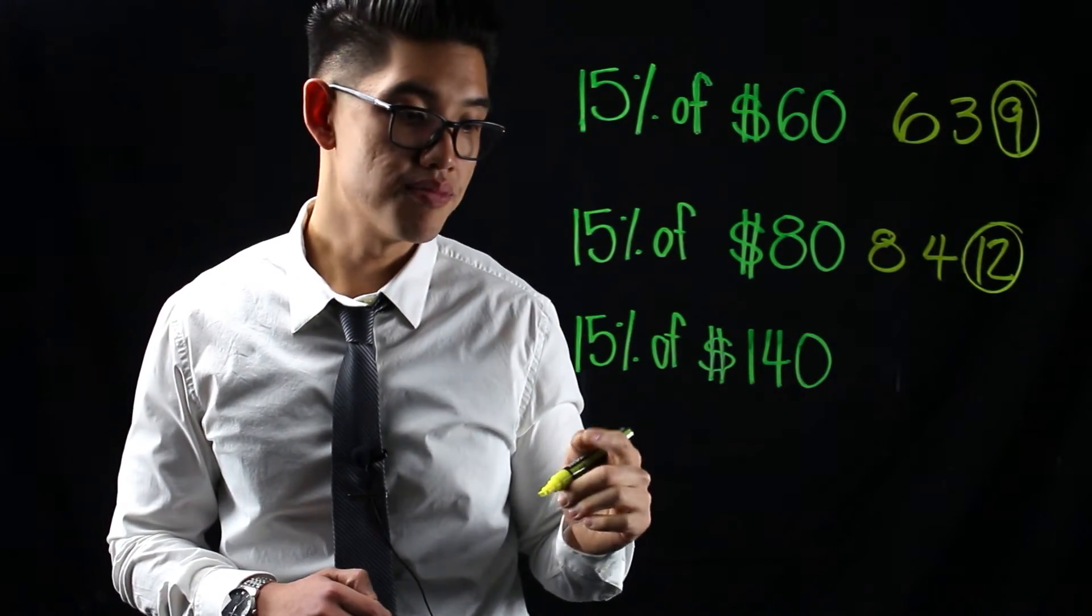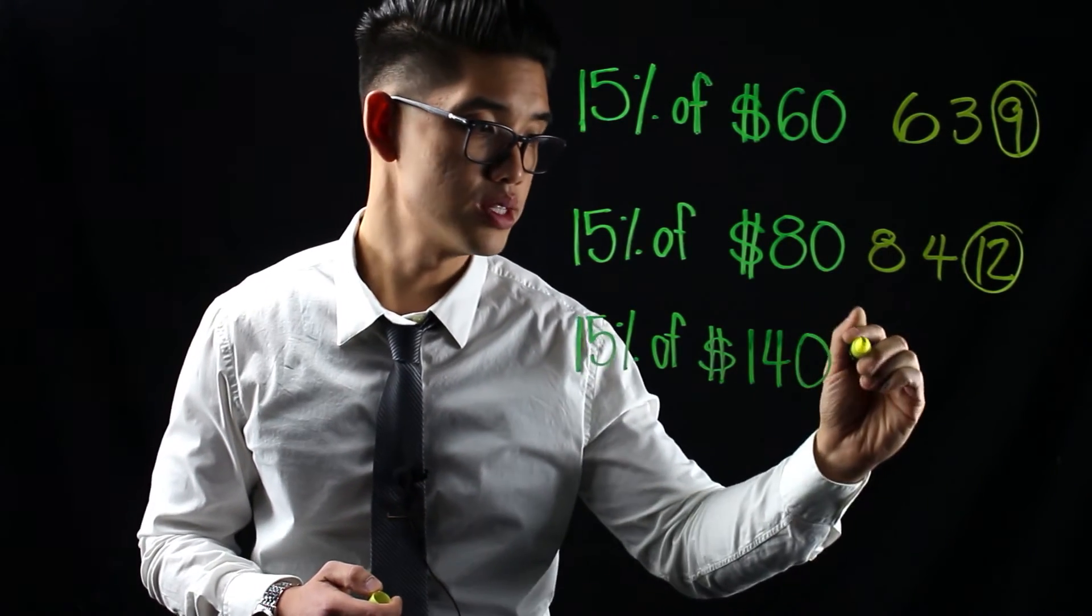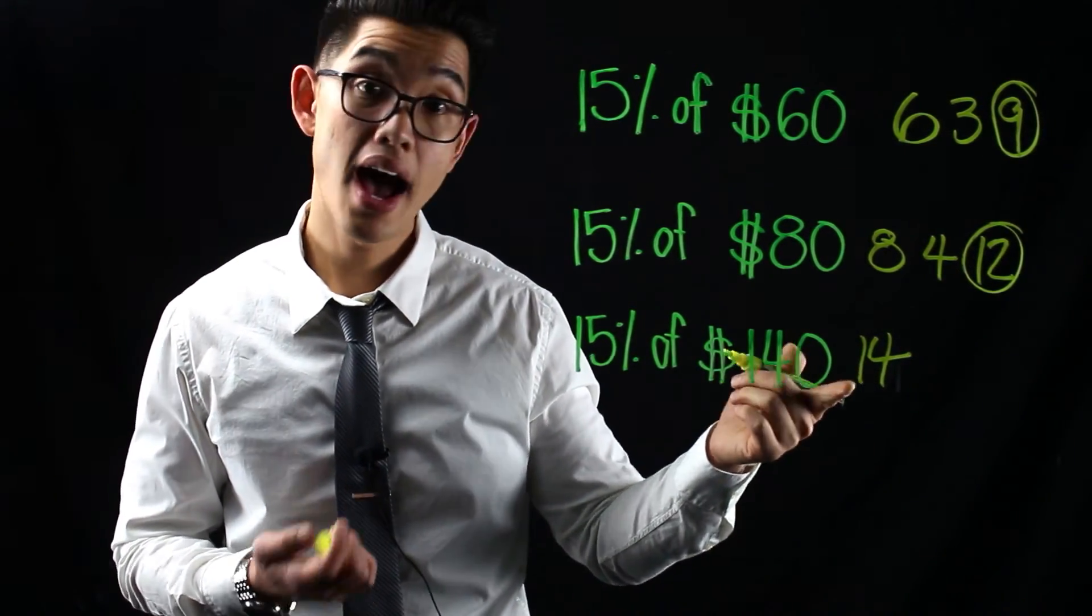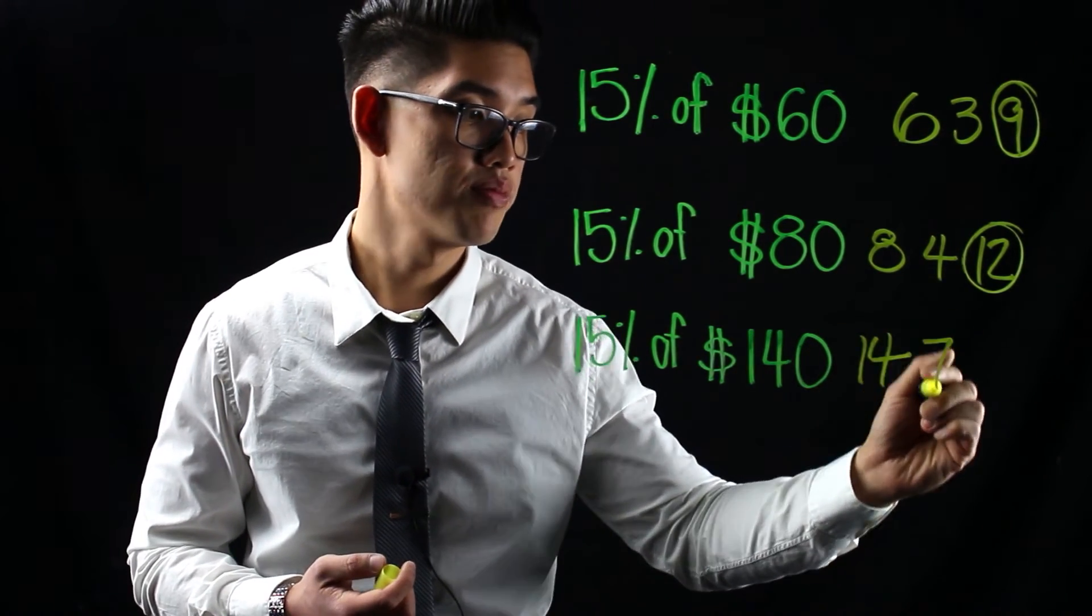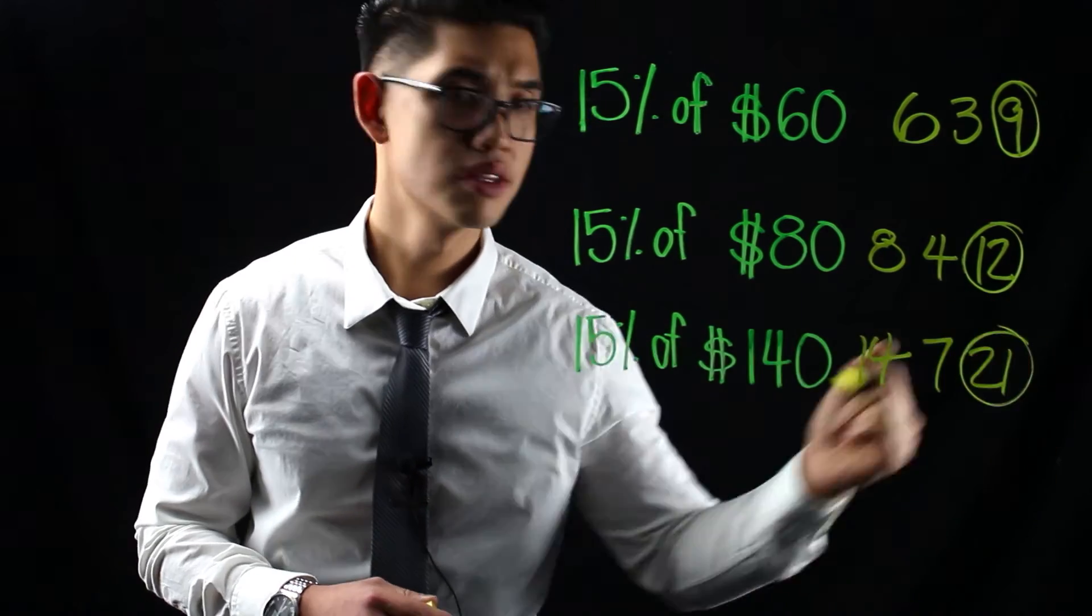And then let's do it one last time. I want to find 10% of 140 first, which is just going to be 14. And then 5% is just going to be half of that, which is going to be 7. 14 plus 7, that's just going to give you 21. Pretty easy, huh?